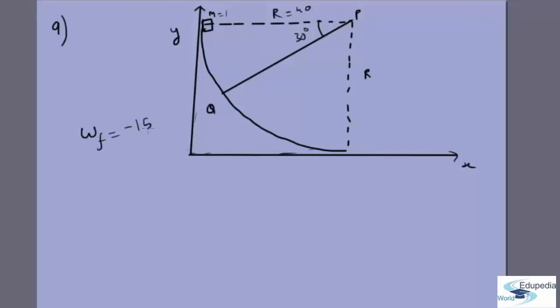Speed of the block when it reaches Q: What is the work done by gravity? It is M, that is 1, into g into this height. What is this height? 40 sin 30, because this is radius R equals 40. This is 40 sin 30, so this is 20, which equals 200 joules. Work against friction is 150 joules.